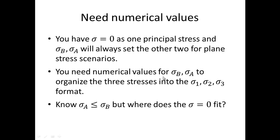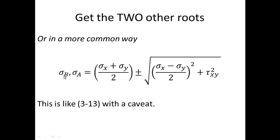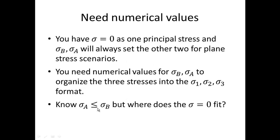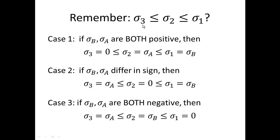We actually need numerical values for sigma b, sigma a in order to organize the three stresses into the sigma 1, 2, 3 format. We know that sigma a is less than sigma b because we're letting b take the positive of the radical. So we know that sigma a is less than sigma b, but where does the zero, the third principal stress fit in? Remember you have sigma 3 is the least, sigma 2 is in the middle, and sigma 1 is the greatest.